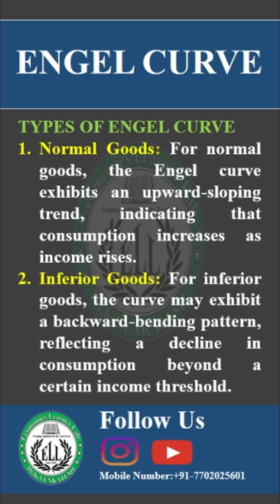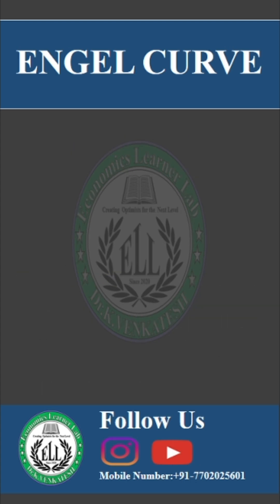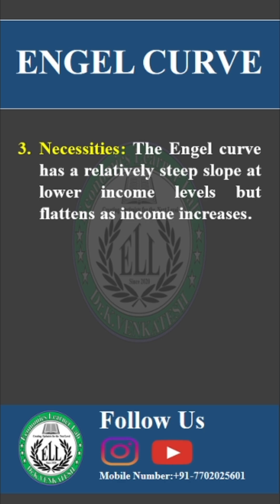The second one is inferior goods. The curve may exhibit a backward-bending pattern, meaning that after reaching a certain income level, consumers start buying less of the good.